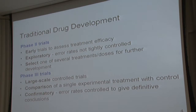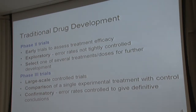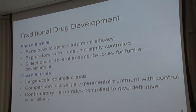We all know traditional drug development and the phases of clinical trial design. Picking out the essential elements of phases two and three: phase two trials are the early endpoint trials there to assess treatment efficacy — most likely exploratory in nature. Regulators now use the terms learning and confirming stages, so phase two trials are our learning stages. We're often looking to select one or maybe a couple of treatments or doses for further development. Phase three trials are large-scale controlled trials, often comparing a single experimental treatment with control, and that's where we start worrying about error rates and being confirmatory.